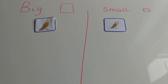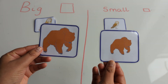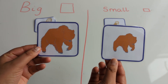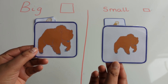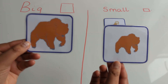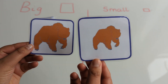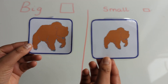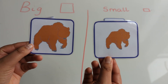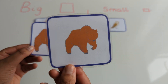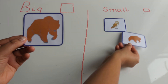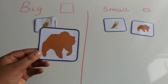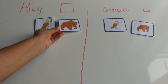Let's have a look at some more pictures. I've got two bears. Which one's smaller? Is this the smaller bear or is this the smaller bear? That's right, this is the smaller bear. So let's put it on the small side and put this one on the big side.